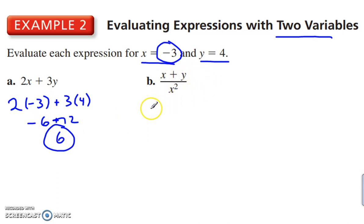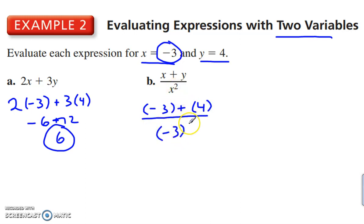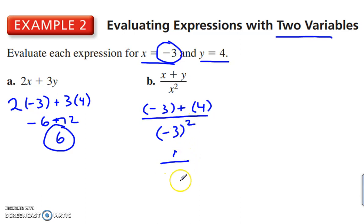Here we have x plus y, so negative 3 plus 4, over negative 3 squared. Here's why it's important to have parentheses: the exponent applies only to what's directly in front of it, so it applies to the entire negative 3, not just the 3. The fraction bar is a grouping symbol, so we do what's on each side before dividing. Negative 3 plus 4 is 1; negative 3 squared is positive 9. So we get 1/9.